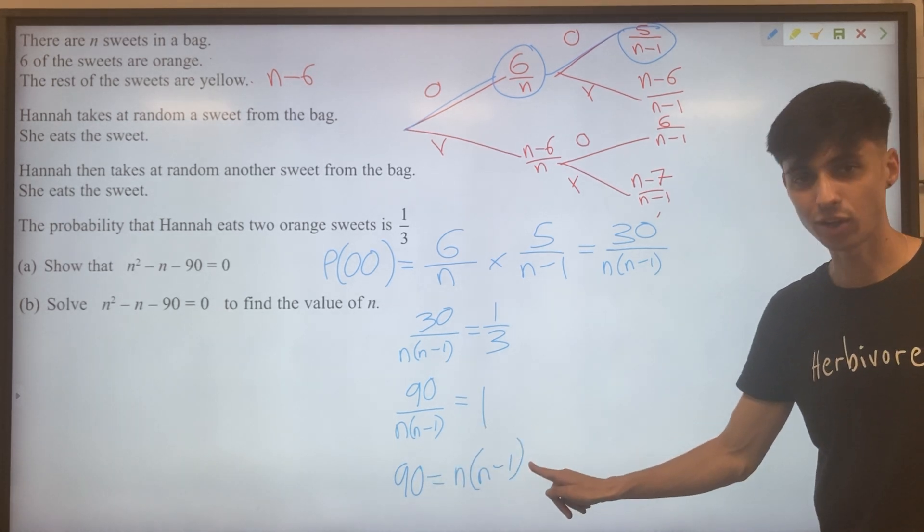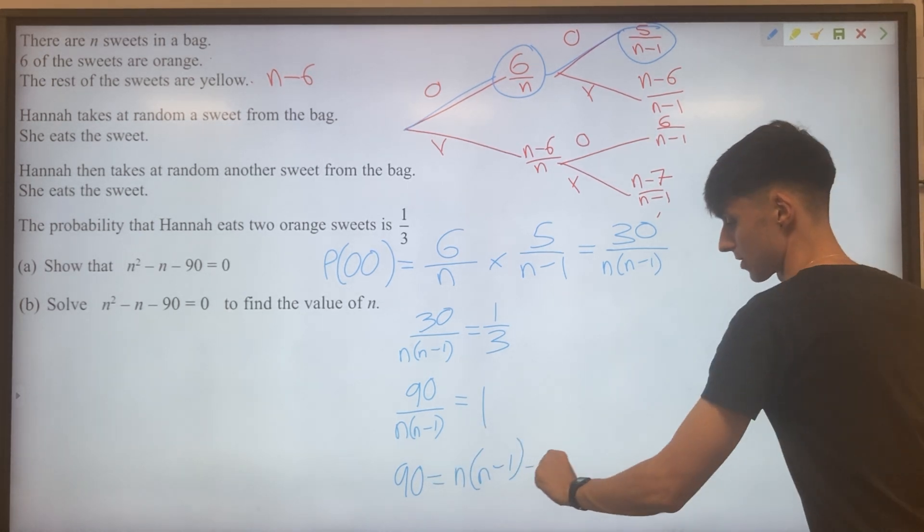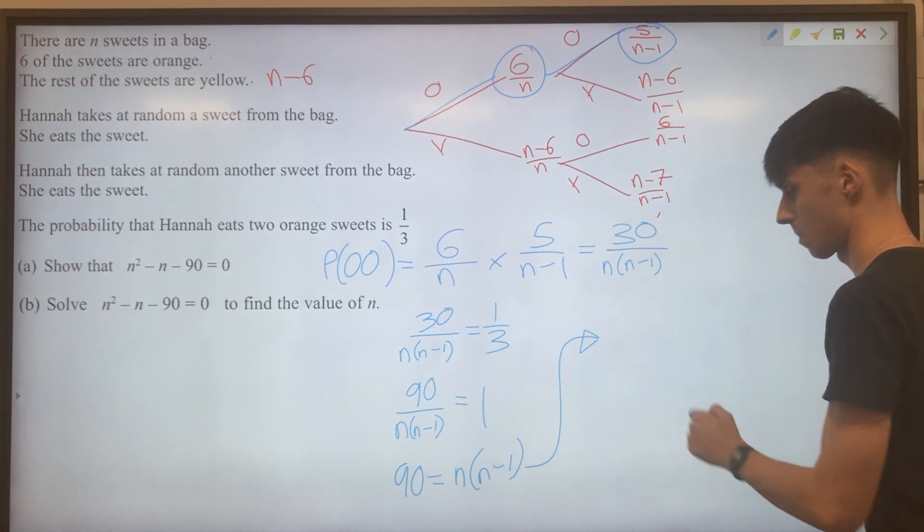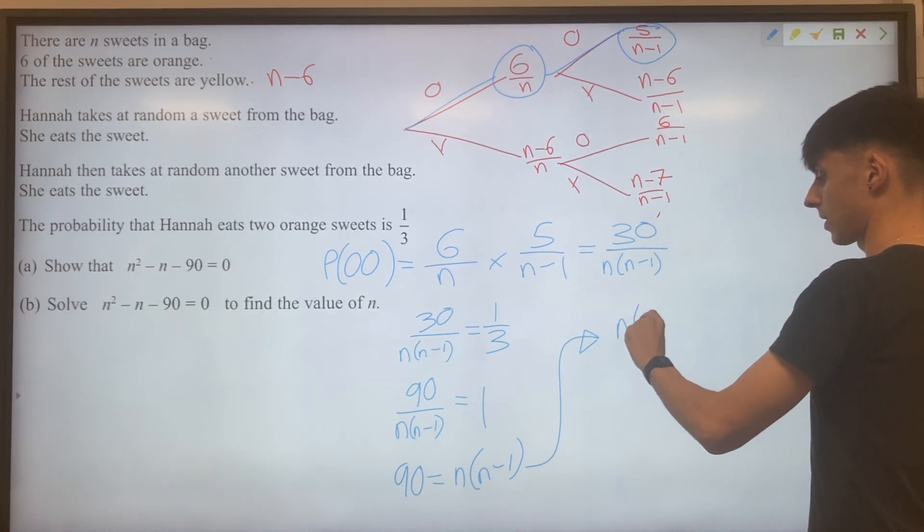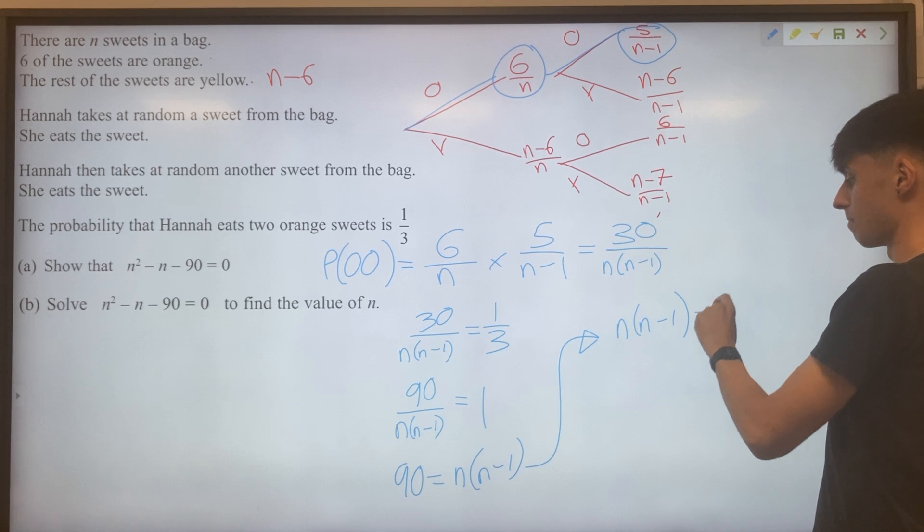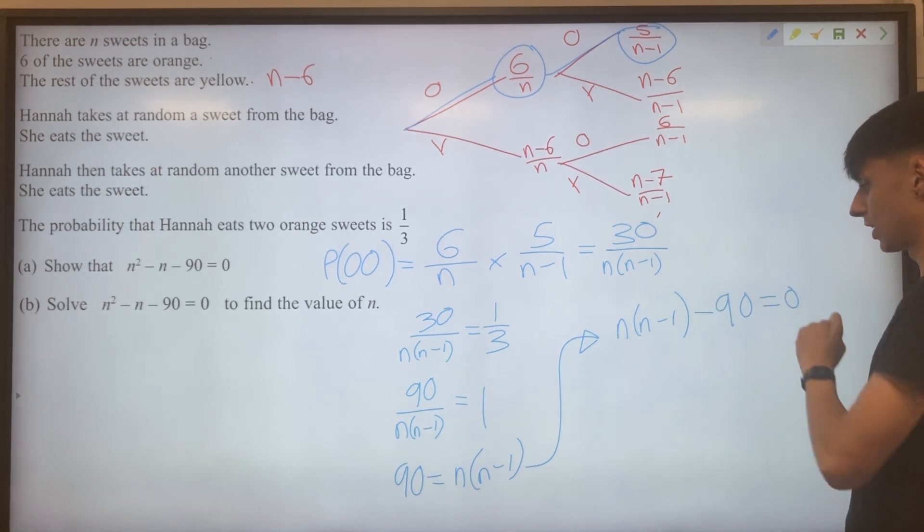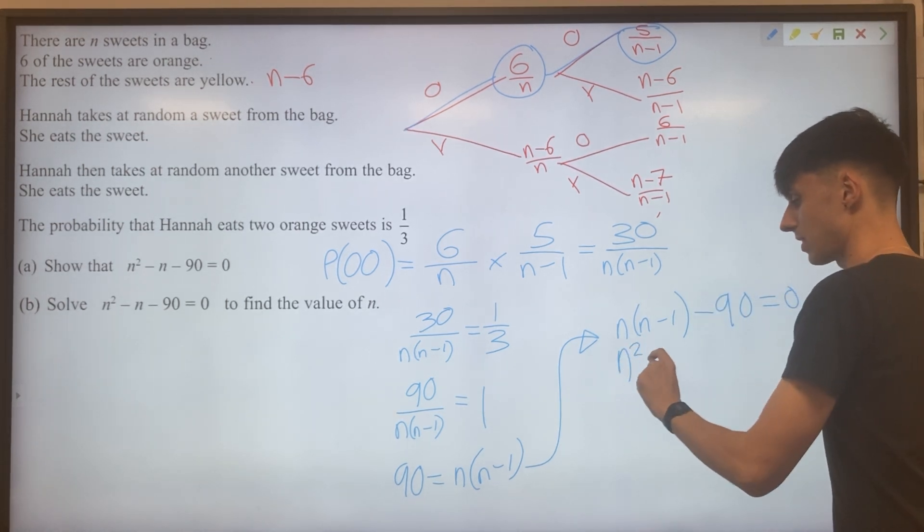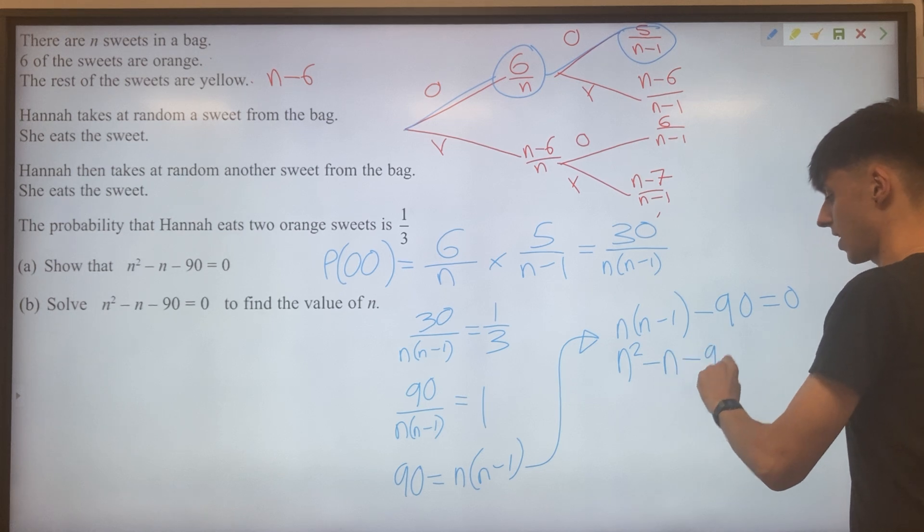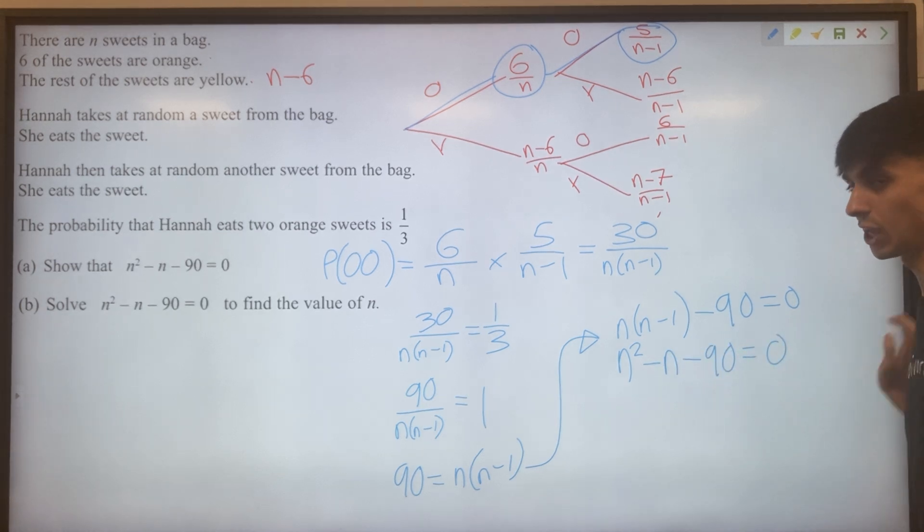Then we can subtract our 90 expanding the brackets. So I'll just do that here. So N brackets N minus one minus 90 equals zero, and expanding those: N squared minus N minus 90 equals zero.